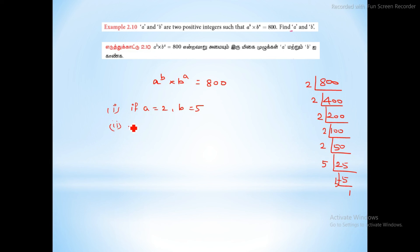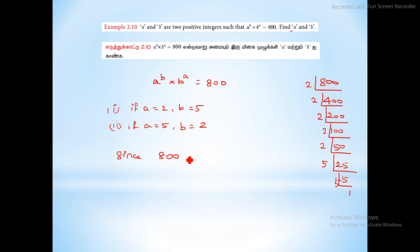Second case: if a equals 5 then b equals 2. Both cases are possible. If a equals 2, we get 5 power 2 into 2 power 5. So this is our answer.